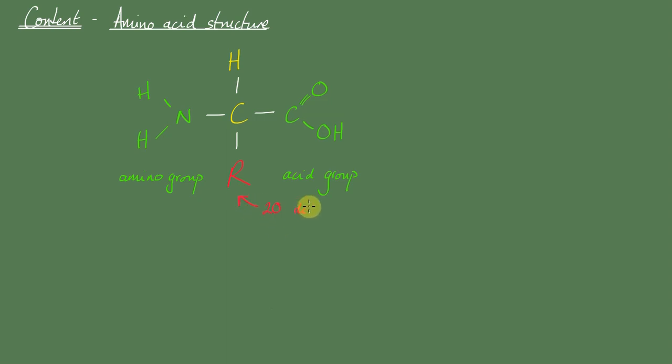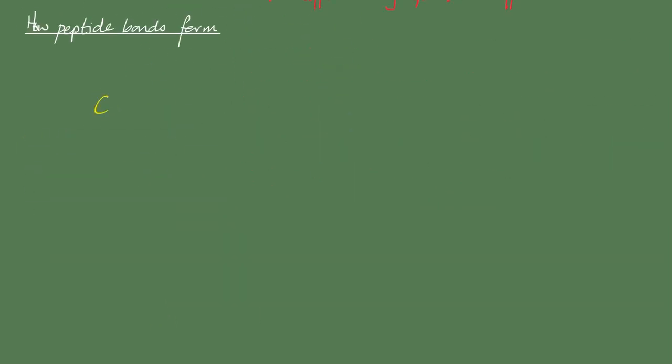The R group is the one bit that changes between the amino acids and there are 20 different R groups naturally, which means there are 20 naturally occurring amino acids. We can use the analogy of our alphabet with a mere 26 letters making an infinite number of words.